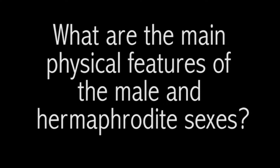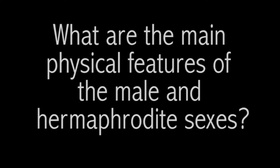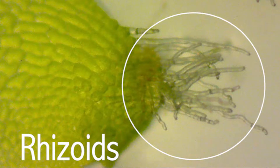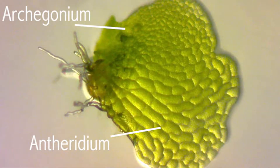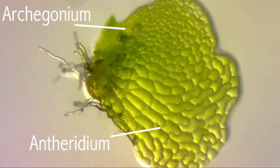What are the main physical features of male and hermaphrodite sexes? Both the male and hermaphrodites have rhizoids. Males are smaller than hermaphrodites. They contain antheridium and closely resemble tongues. The hermaphrodites have archegonium and are much larger, somewhat resembling boxing gloves.